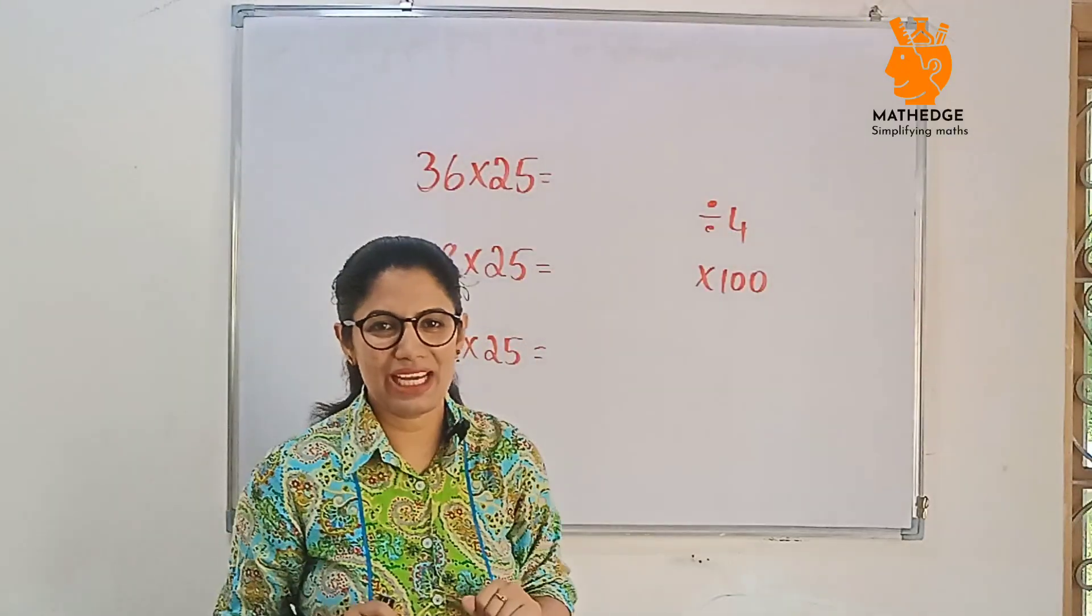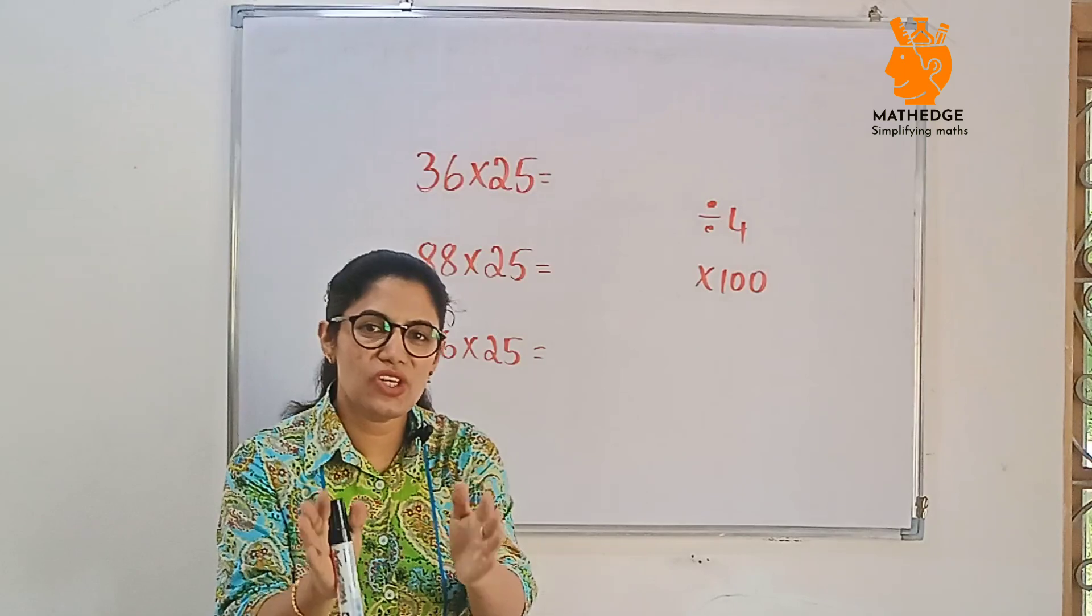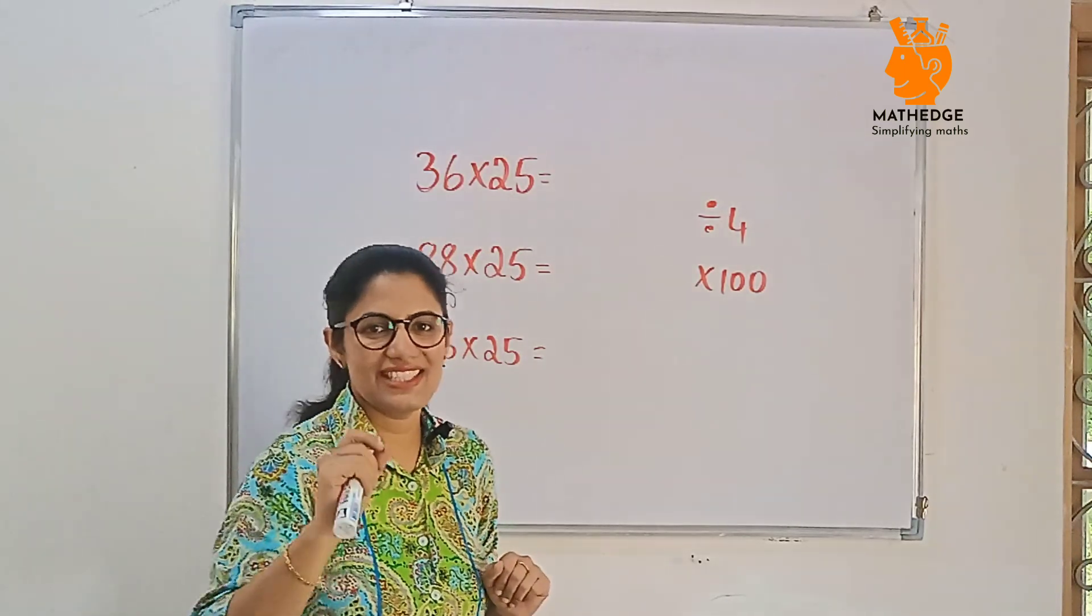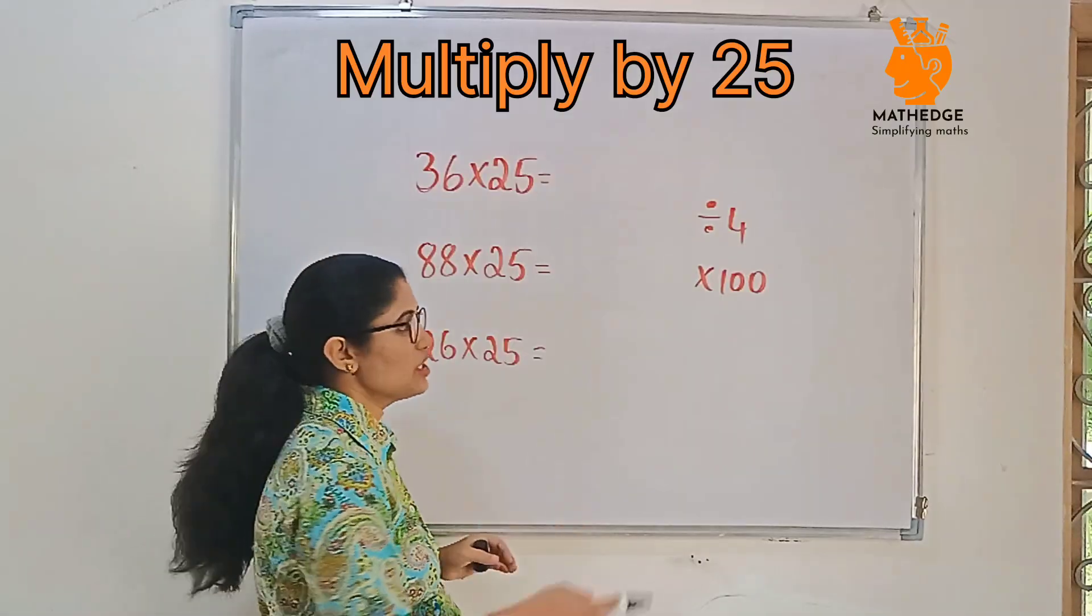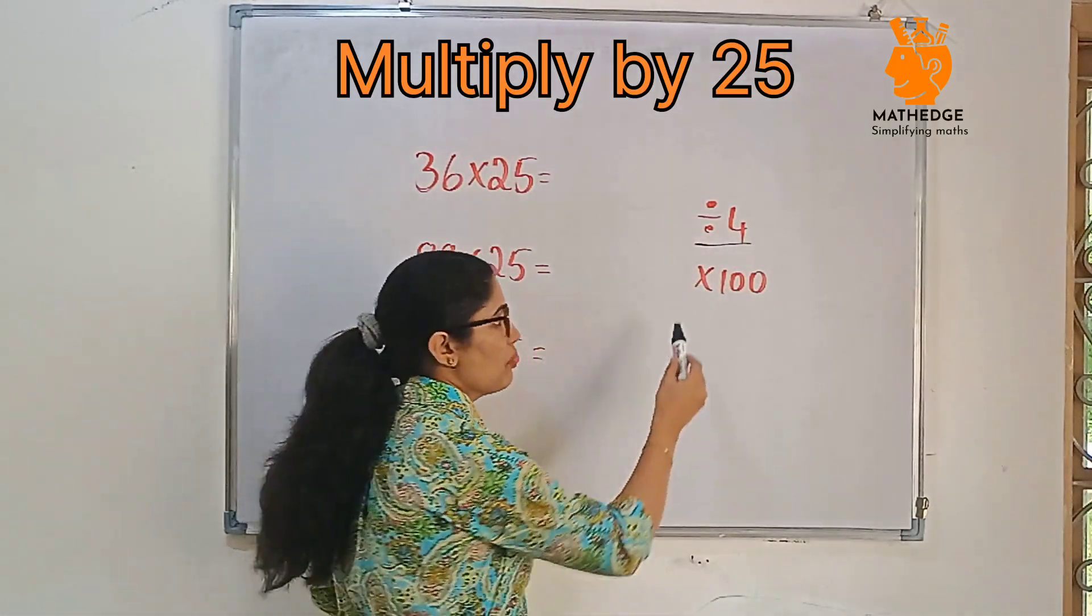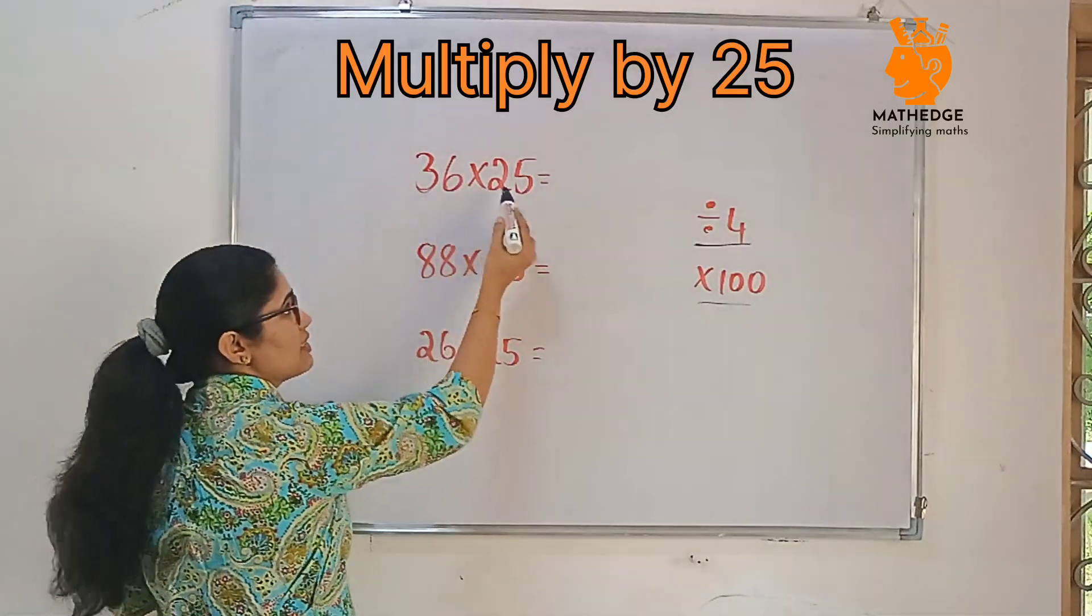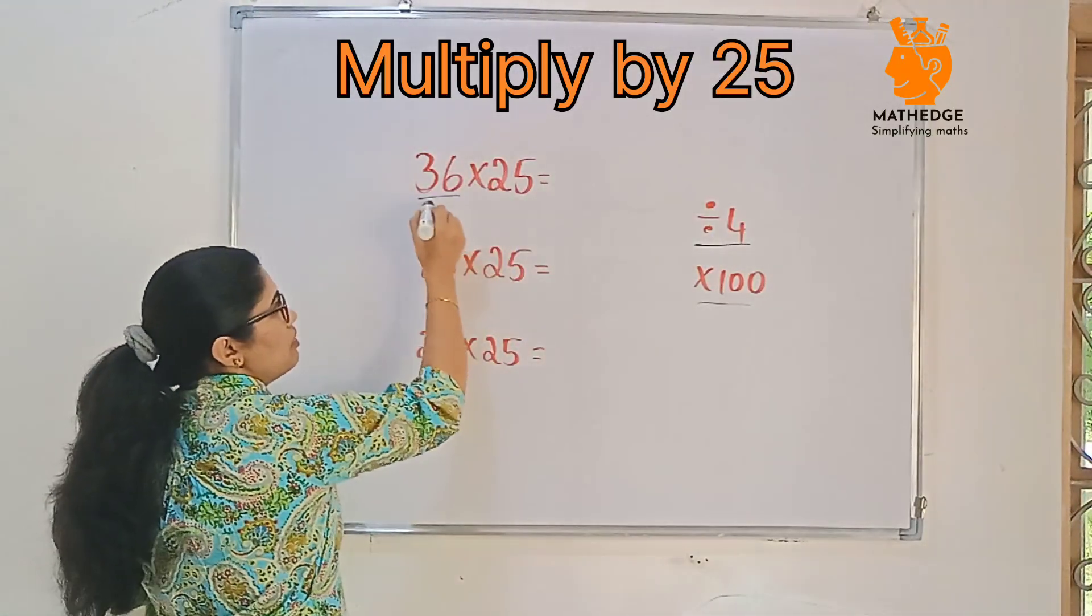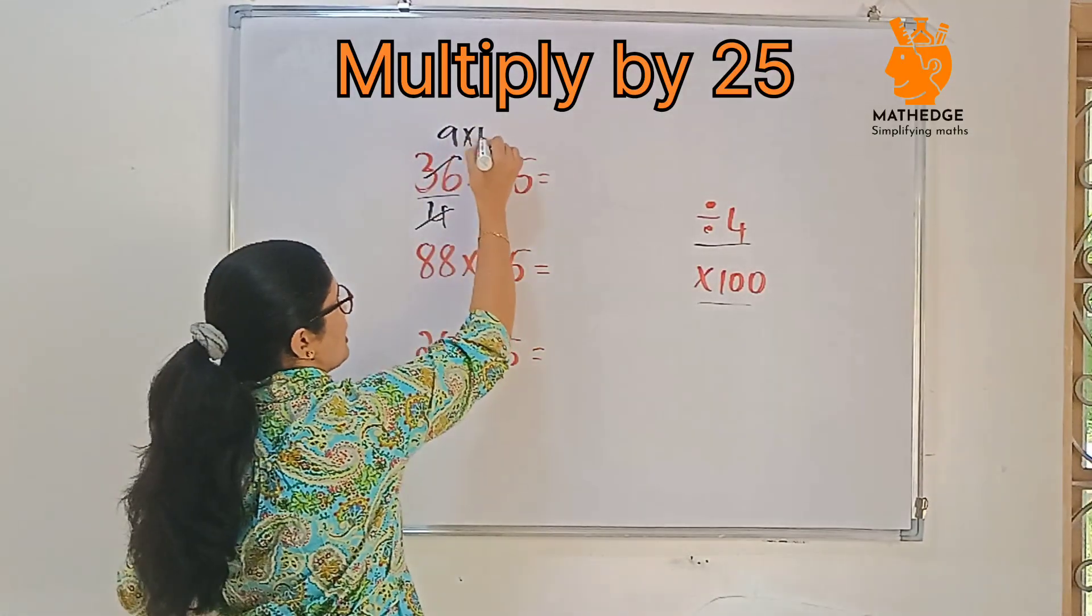Alright, let's multiply by 25. Most students waste time by multiplying normally but here is the shortcut. First step is divide by 4 and then multiply by 100 you will get your answer. Again I will repeat, divide by 4 then multiply by 100 you will get your answer. See 36 multiply by 25, first divide by 4, 4 nines, then multiply by 100.